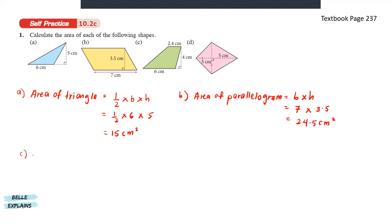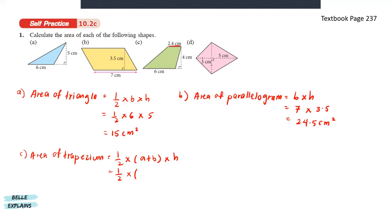Next for C, the area of a trapezium is 1 over 2 times the sum of parallel lines times the height. The parallel lines here are 2.4 and 6, times the height which is 4, so that gives us 16.8 cm squared.